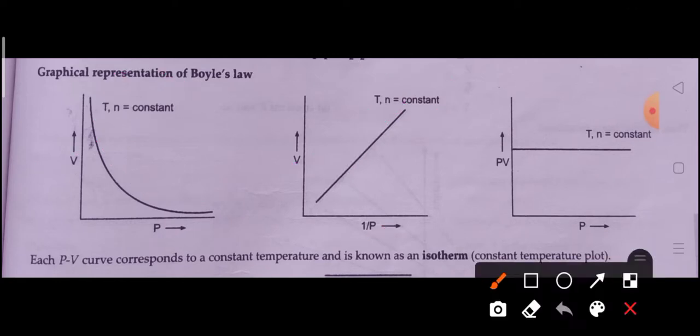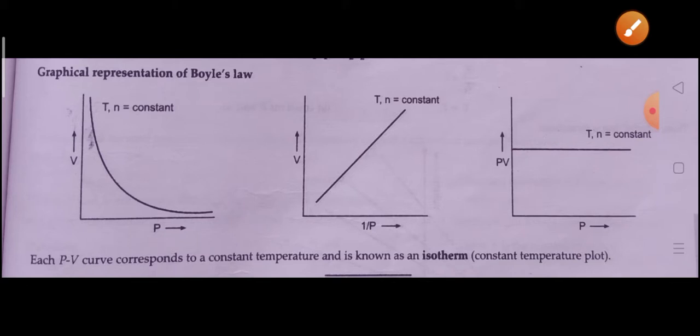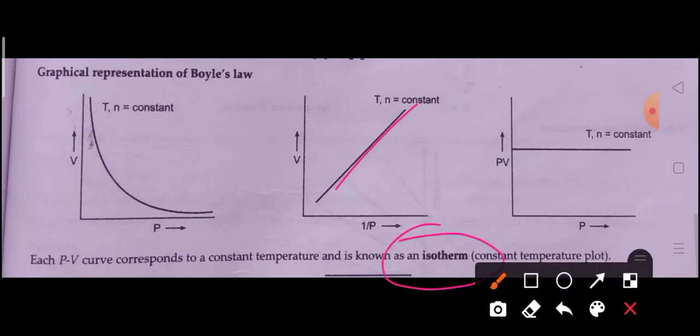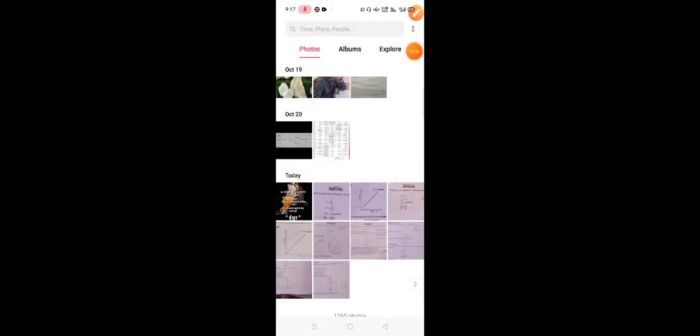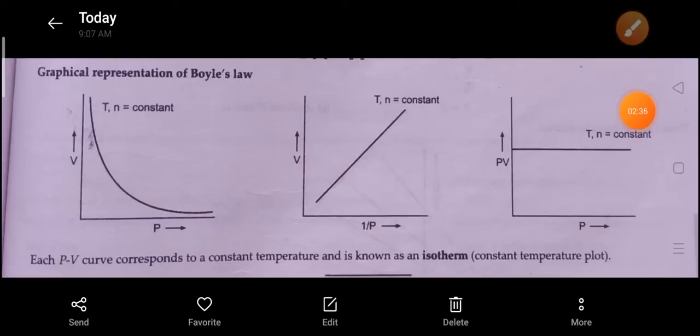When you plot the graph between PV and P, it will be a parallel line. This graph is said to be an isotherm because the temperature is constant. That's why these graphs are known as isotherms.